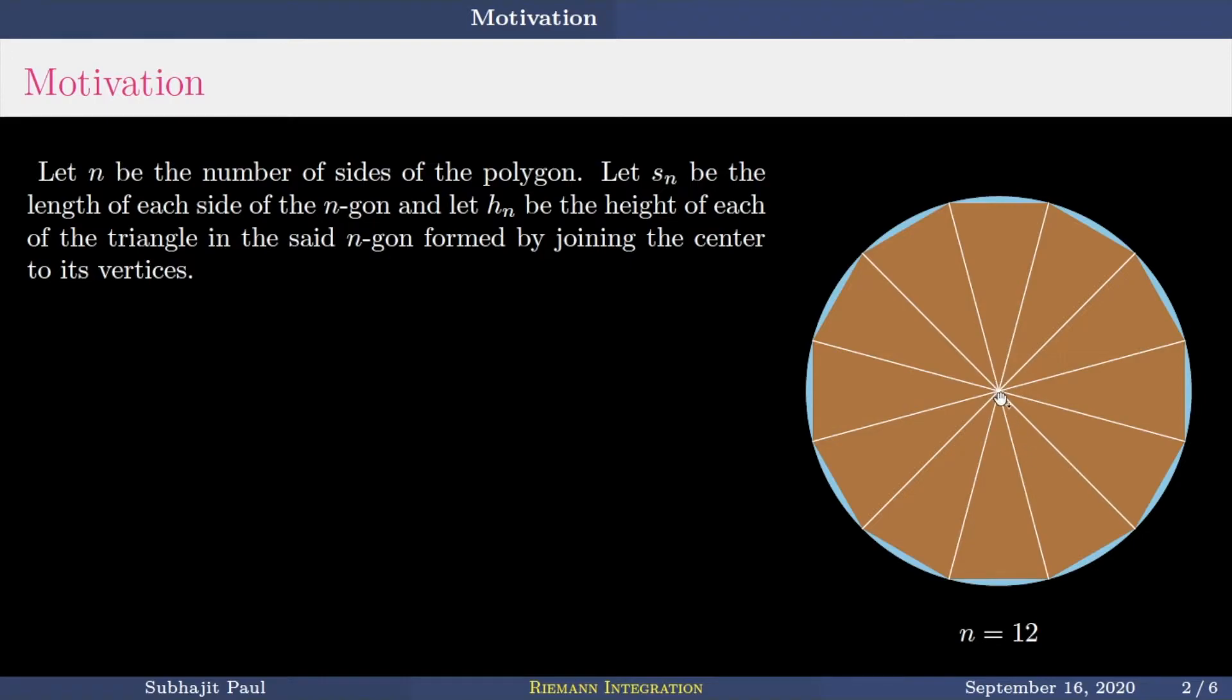And let h_N be the height of each of the triangle in the set N-gon. So suppose this one, this is your height, h_N be the height of each of the triangle in the set N-gon formed by joining the center to its vertices. Then the total area of the N-gon is N times area of a small triangle.